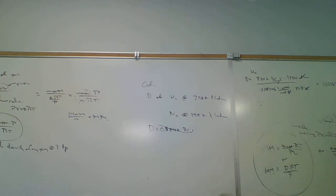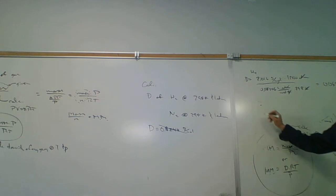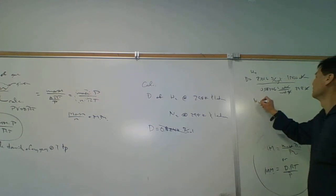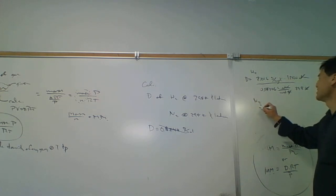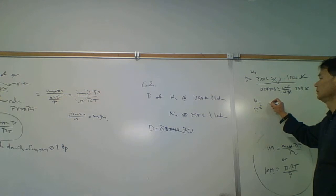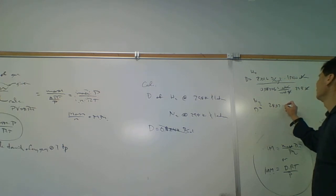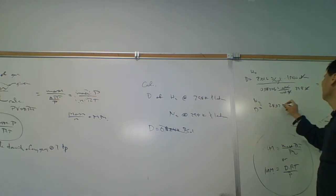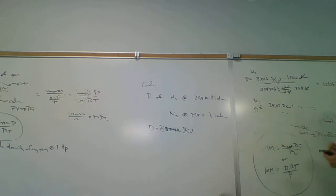For nitrogen, did somebody get nitrogen? For nitrogen, it's the same thing. We just changed the molar mass to 28.02 grams per mole, but everything else is the same. So let's go ahead and calculate nitrogen: 28.02.